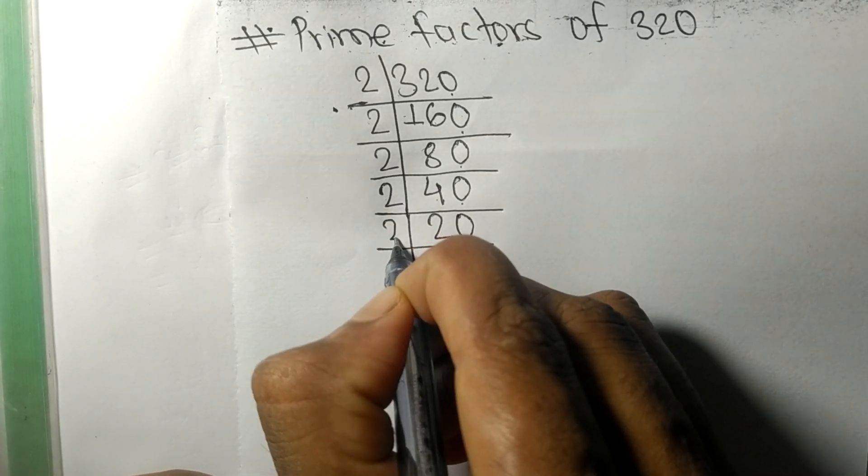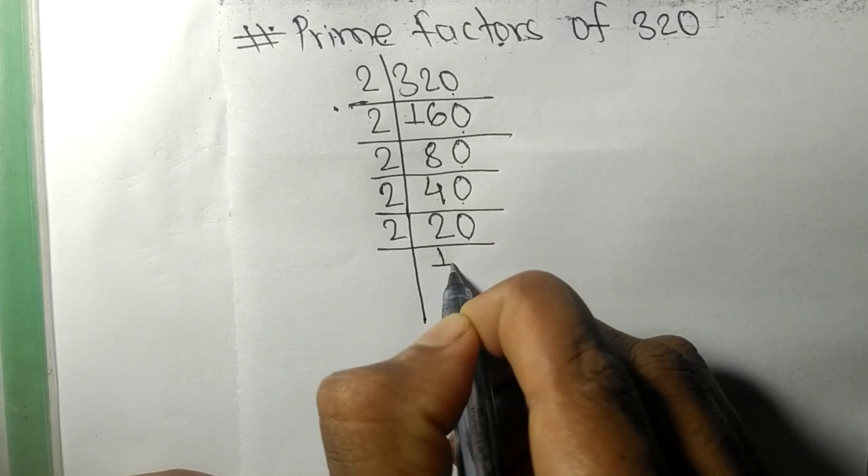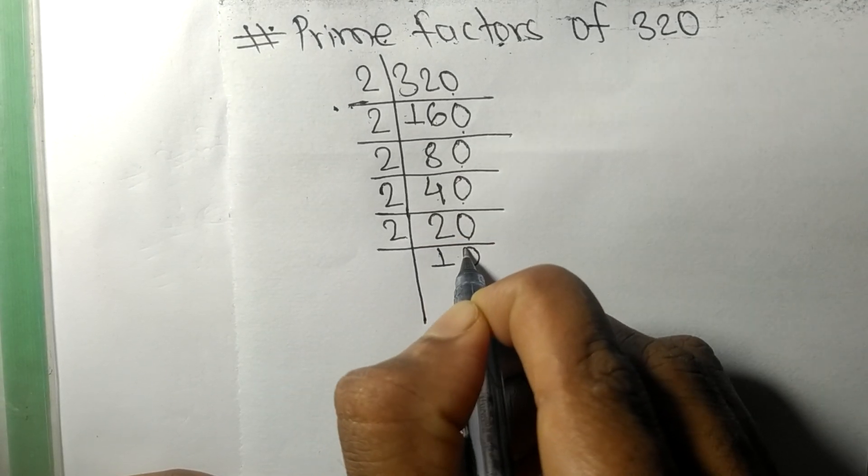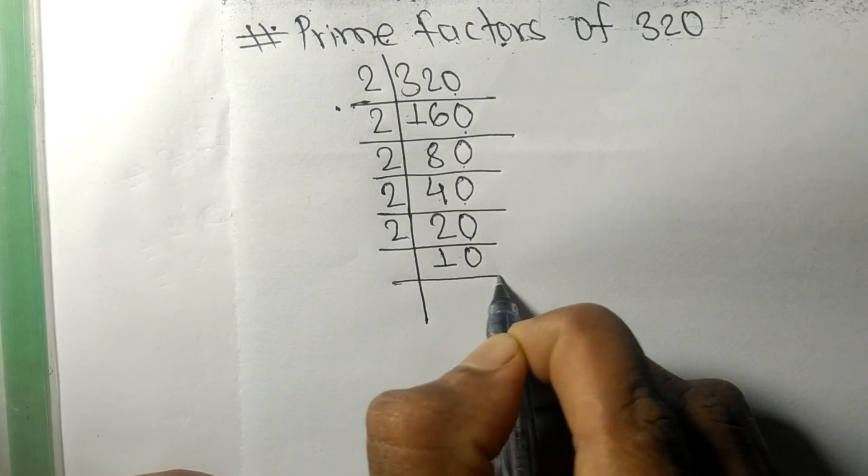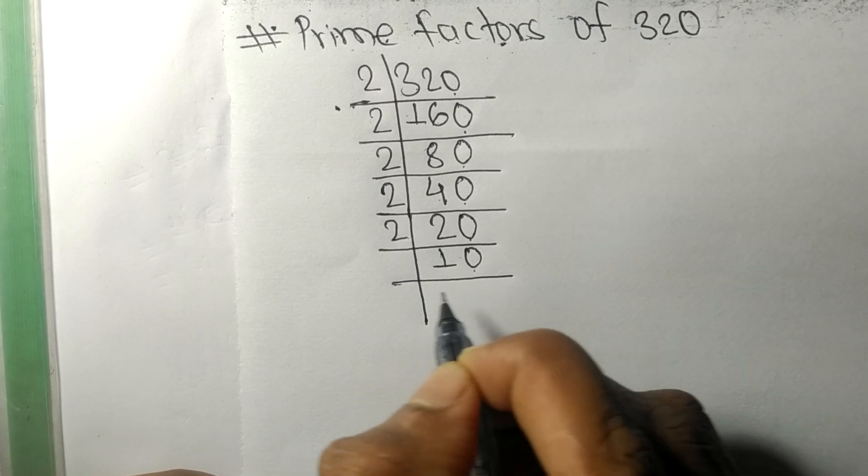Divisible by 2. 2 times 1 is 2, 2 times 0 is 0. Again 0 at the last, so divisible by 2.